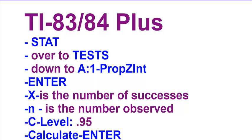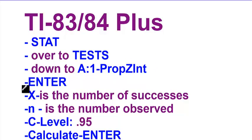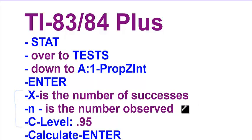Let's look at how to put this in on your calculator to find your 95% confidence interval. You would start by pushing STAT, then go over to TEST, and then down to A1, and press ENTER. These things will come up that you're going to fill in: X is the number of yeses or successes that you have, N is the number observed or people that you ask, and C level is .95 for the 95% confidence interval. Then you go down to CALCULATE and press ENTER.